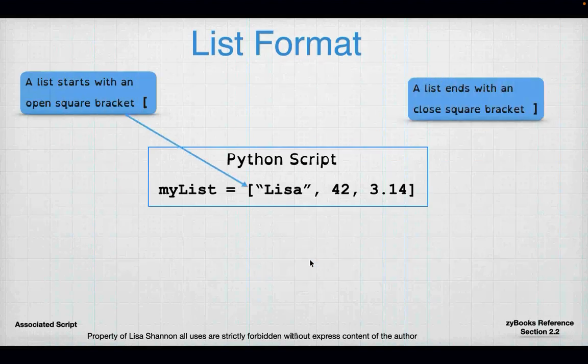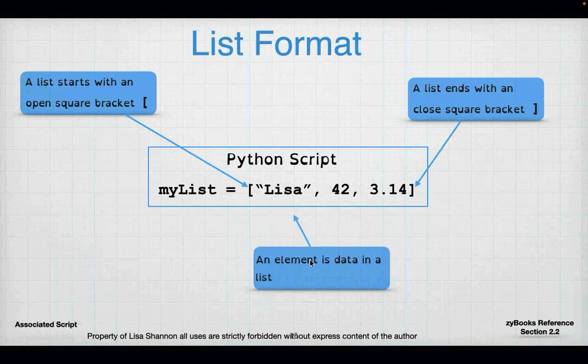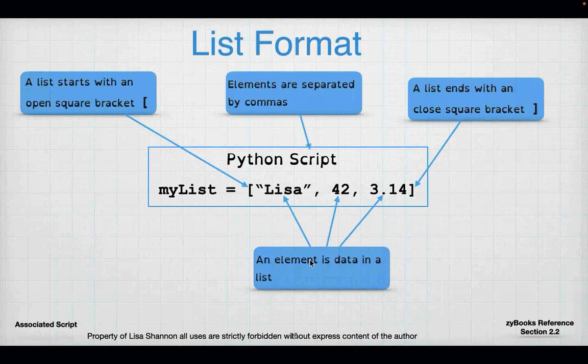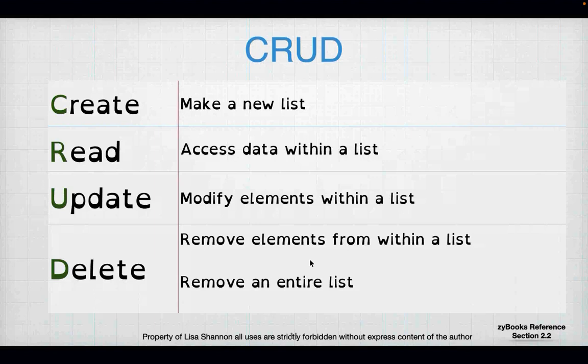In list format, lists always start with an open and closed square bracket. Inside the brackets, there are pieces of information separated by a comma. Notice there is no comma after 3.14 — that's because it's the last element and you're not separating it from another element. You can have an empty list or a populated list.